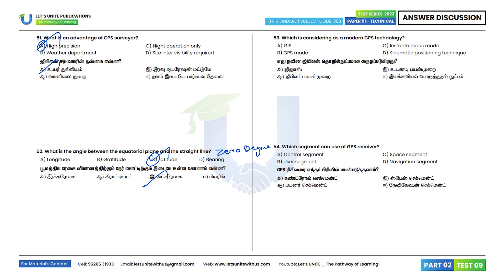Question 53: Which is considered a modern GPS technology? Modern GPS technology is the kinematic positioning technique. Option D is the correct answer. Question 54: Which segment uses a GPS receiver? The user segment uses the GPS receiver. Option B is the correct answer.